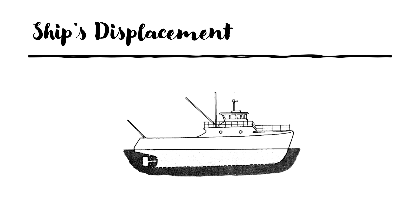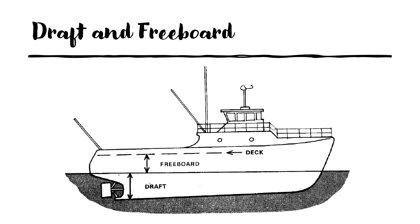For a vessel to be stable, it has to firstly float in the water, which is based on the Archimedes principle. This principle states that every floating body displaces its own weight of the liquid in which it floats. So as soon as a vessel immerses in the water, it displaces an amount of water equal to its own weight. For a ship to float freely, the weight of the ship must equal the weight of the volume of water it displaces.